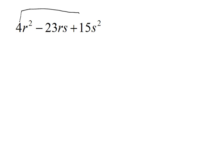I'm going to multiply the first and the last terms, just the numbers: 4 times 15 would give us 60. Now we're going to think of factors of 60, and we're going to stop when we get a combination of 23.